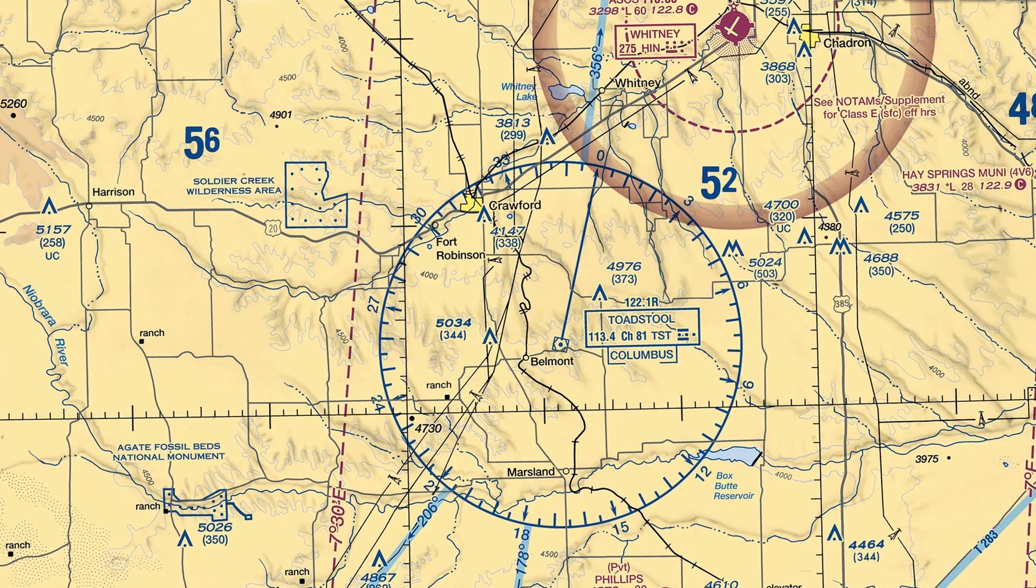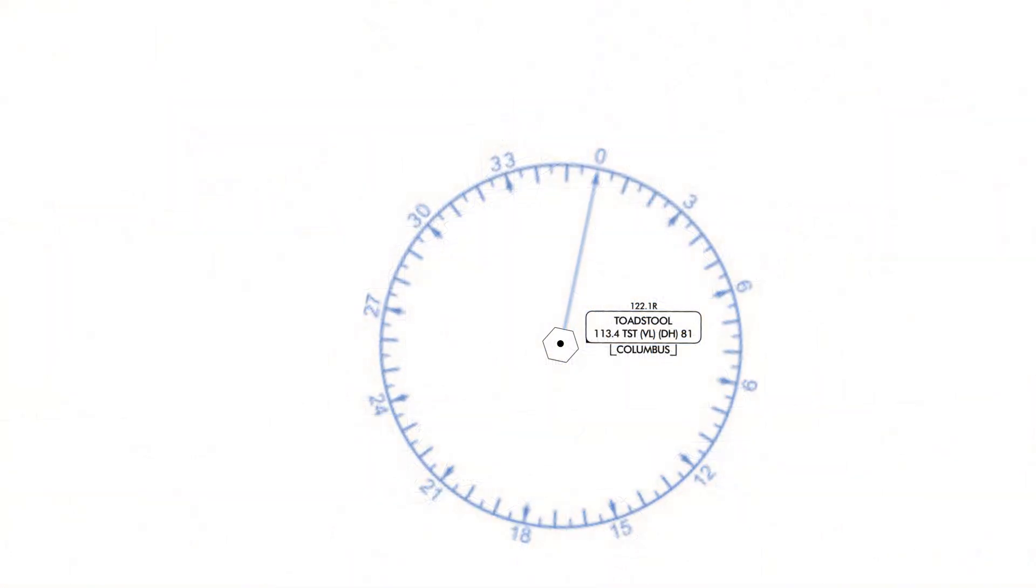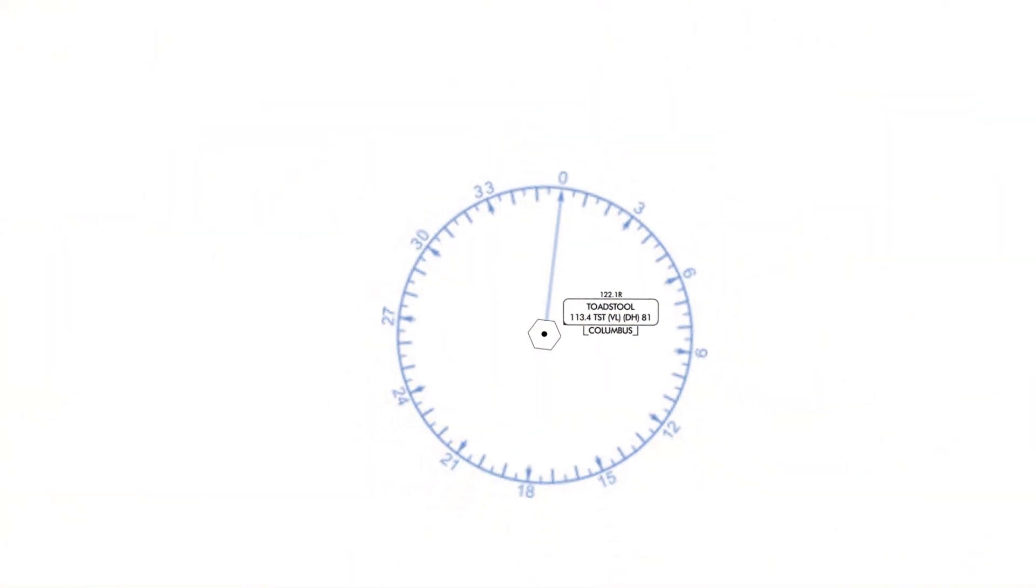You're on an IFR flight bound for your destination airport, Chadron, in Nebraska. Your current route segment has you flying inbound to the Toadstool VOR. You then hear this instruction from ATC.